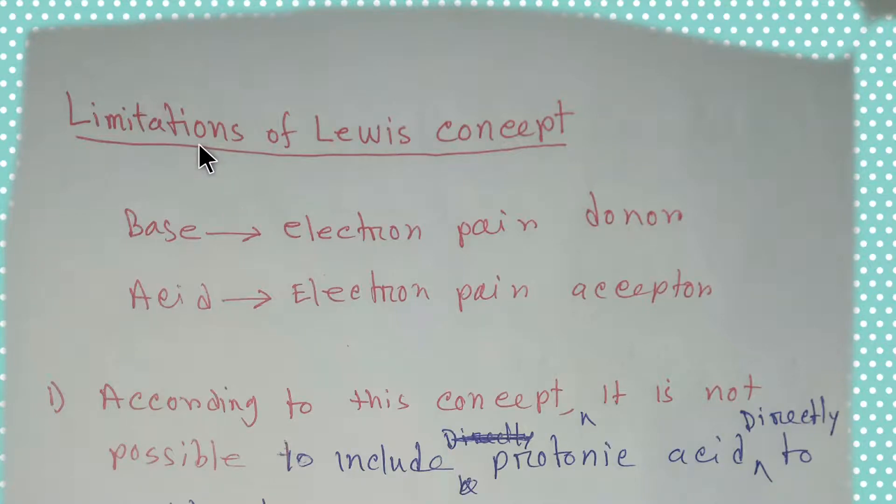Today we are going to learn about the limitations of Lewis concept. According to Lewis concept, base is electron pair donor. On the other hand, acid is electron pair acceptor. That is, according to Lewis concept, one or more electron pairs will be exchanged between acid and base.